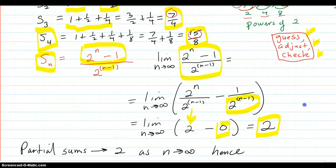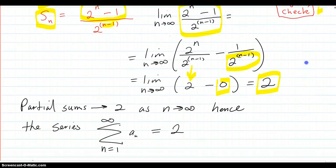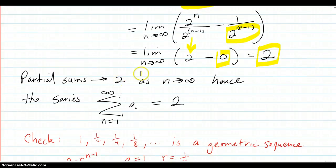So all those numbers in this sequence add up to two. So the partial sums go to two as n goes to infinity. Hence the series, which is the limit of the partial sums, goes to two.